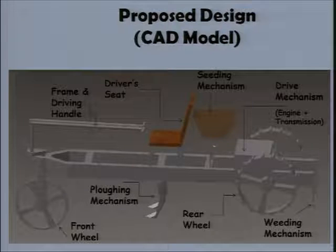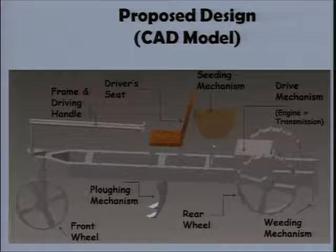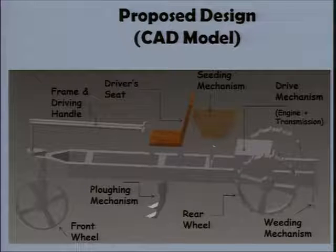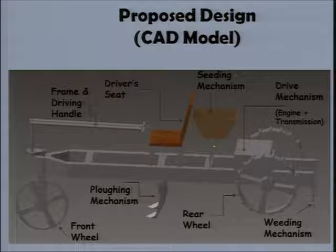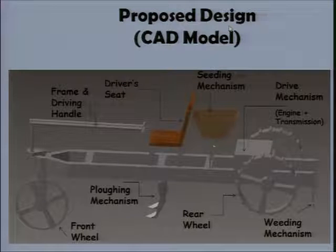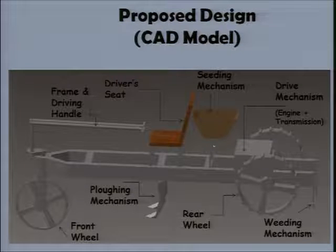So that an illiterate farmer can also operate the machine very easily for a sufficient period of time. This is the design which we actually made. It is a simple design where we have a frame, and this is a simple rear-wheel driven vehicle where we have a 150cc engine running the rear two wheels using a chain and sprocket drive. We tried to accommodate all three mechanisms in the same device. We have a plowing mechanism in between the vehicle so that the center of gravity of the vehicle may help the plow to penetrate more inside the soil.